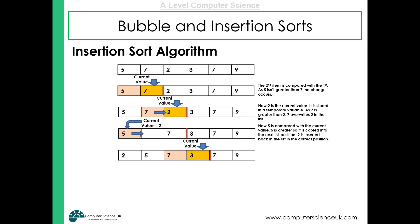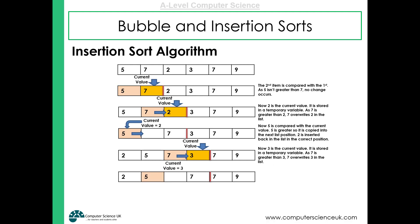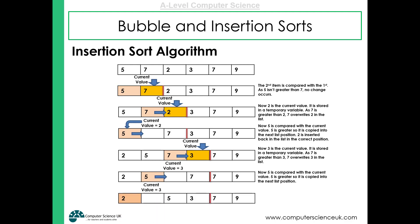The insertion sort then moves to the next item in the list, which is three. Three is smaller than seven, so seven moves up one. Three is smaller than five, so five moves up one. And three is greater than two, so it's inserted into the correct position.